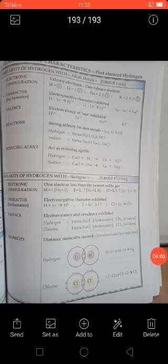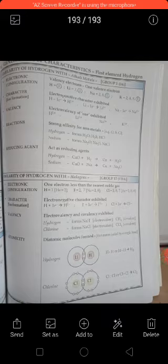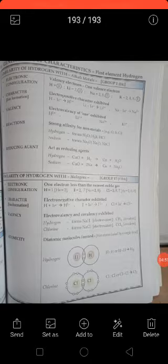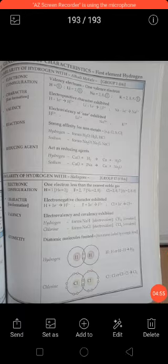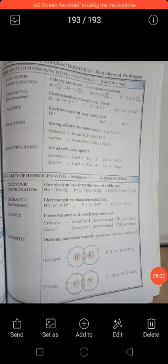So in this video, I tried to summarize similarities of hydrogen with alkali metals as well as halogens. In the coming videos, I will be uploading the preparation of hydrogen. I think I have done this one, but still I am summarizing. And afterwards we will go for the next part of this chapter. So thank you.